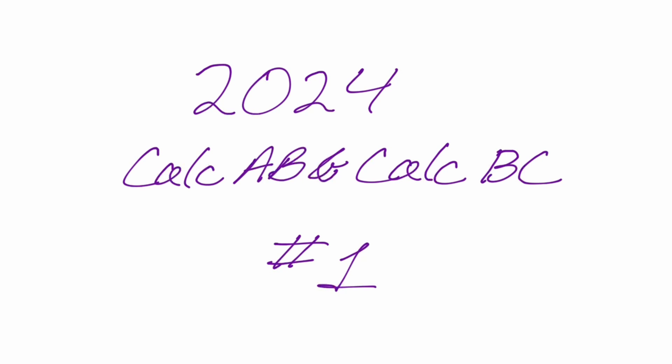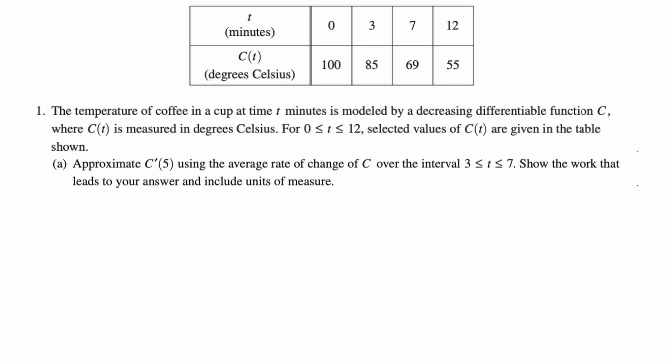Okay, in this video we're going to be doing number one from the 2024 Calc A, B, and BC exams. Let's take a look at the problem. Temperature of coffee in a cup at time t minutes is modeled by a decreasing differentiable function C, where C(t) is measured in degrees Celsius. Between 0 and 12, selected values of C(t) are given in the table shown.